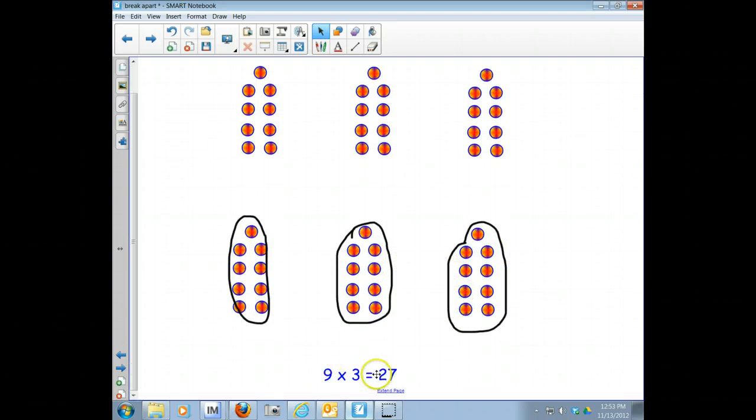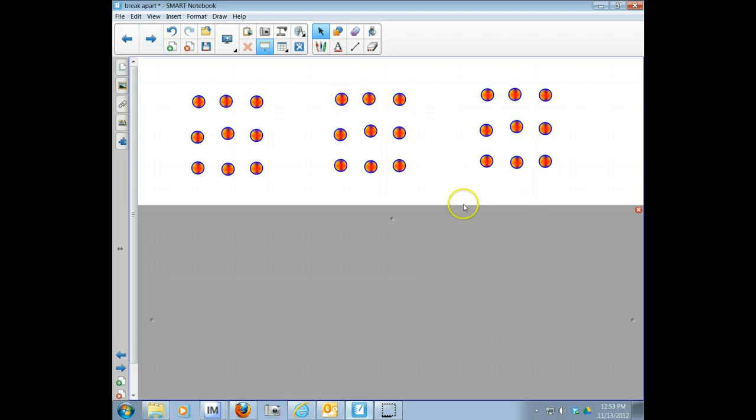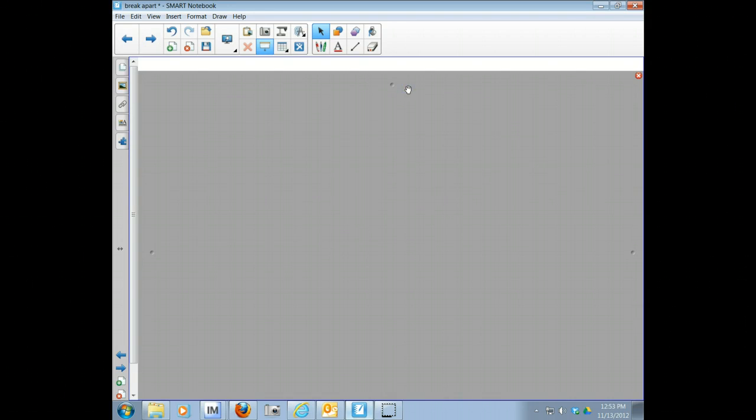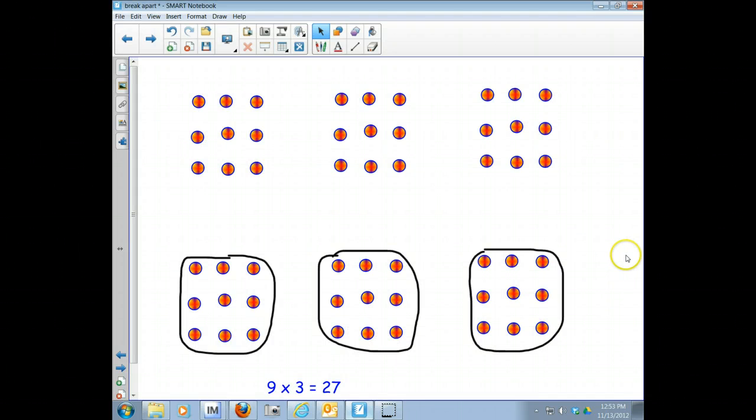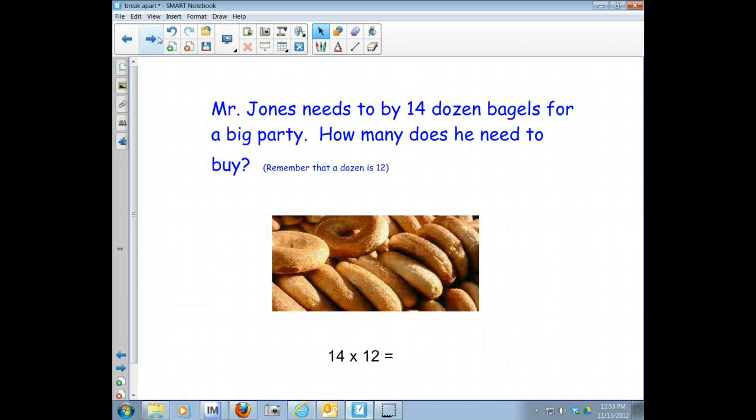Let's see how you did. Hopefully you realized that there were three groups and in each group there were nine, so there were 27. Let's try one more. How many are there? Go ahead and figure it out. Let's see how you did. Nine times three equals 27, three groups of nine each.